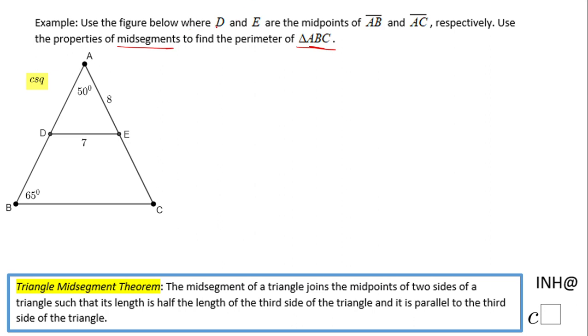We know that D and E are the midpoints of AB and AC. Looking here, we notice this is 8, and since E is the midpoint, that means EC will also be 8. That gives us a chance to find AC.